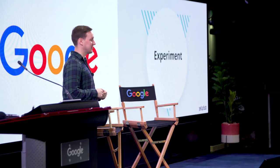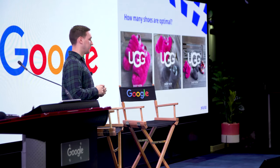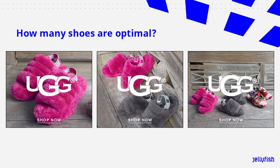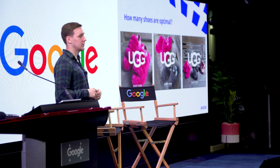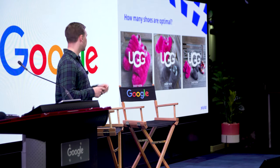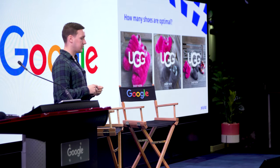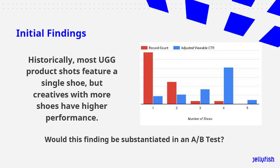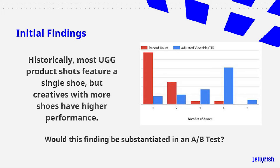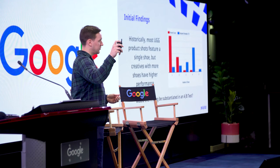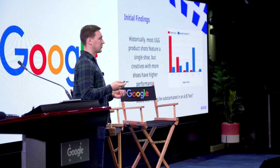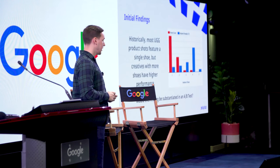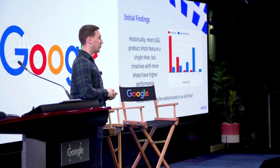We did an experiment with one of our clients, Deckers, specifically for their brand UGG. We wanted to see if there was any difference in performance based on the number of products in a shot — two, four, and six products. With the portfolio-level analysis, we found that most of their creatives had one or two shoes. But as you can see with the blue bars representing click-through rate, CTR actually peaks past two shoes in the three-to-four range, then quickly drops off — probably with just too much going on — in the five and six range.